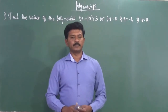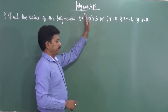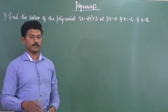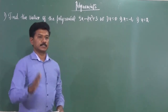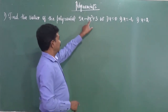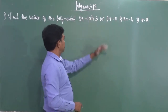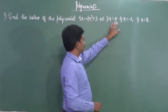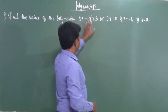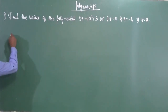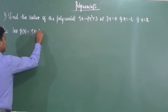We are going to solve very simple, important conceptual problems today. Find the value of the polynomial 5X minus 4X squared plus 3. This is a polynomial — the variable should have non-negative integral exponents, which is the definition of a polynomial. X has power 2 and power 1, so it qualifies. Find the value at X equal to 0, X equal to minus 1, and X equal to 2. This is a one-mark compulsory question in your examinations.